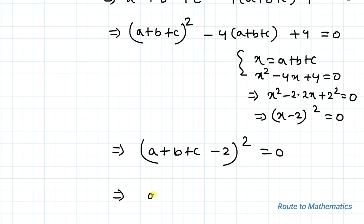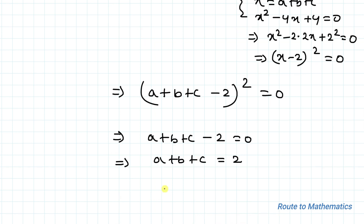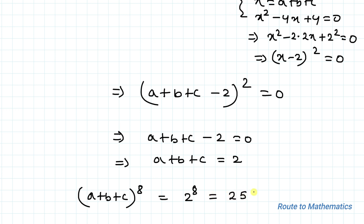So (a plus b plus c minus 2) squared equals 0, which gives a plus b plus c equals 2. We are asked to find (a plus b plus c) to the power 8, so the answer is 2 to the power 8, which equals 256.